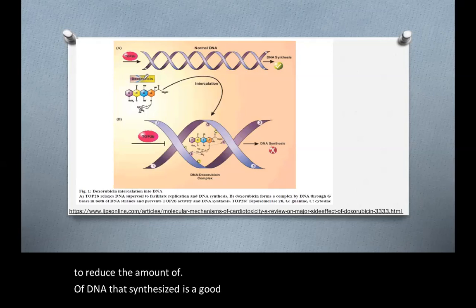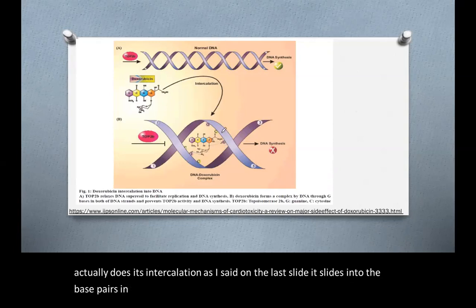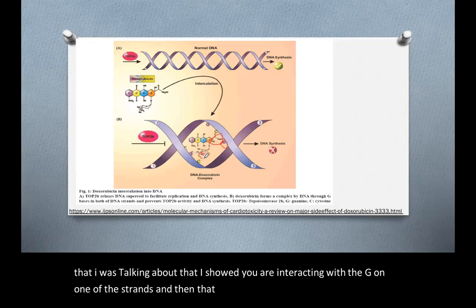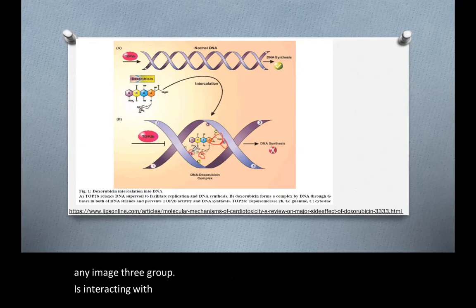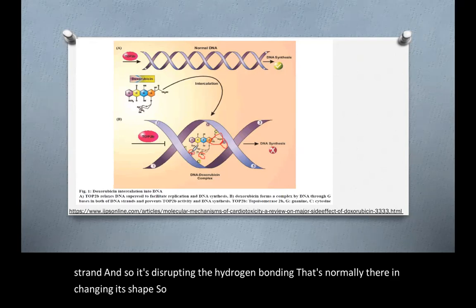And if you look at how doxorubicin actually does its intercalation, as I said on the last slide, it slides into the base pairs in the helix. And what you can see is that those two OH groups that I was talking about that I showed you are interacting with the G on one of the strands. And then that NH3 group, that positively charged NH3 group, is interacting with the phosphate on a guanine on the second strand. And so it's disrupting the hydrogen bonding that's normally there and changing its shape so that DNA no longer can be synthesized.